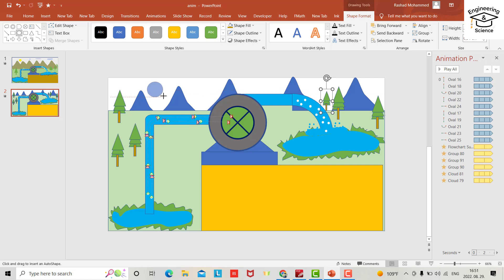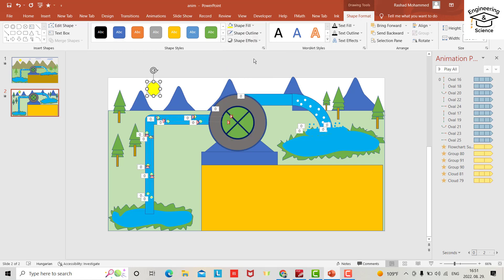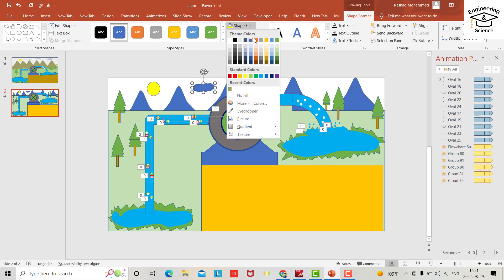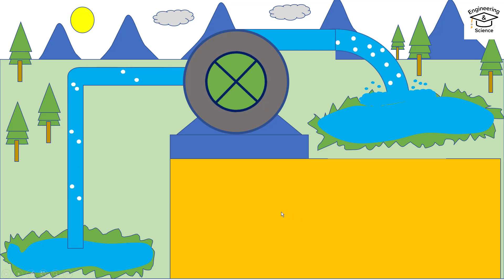You can also provide a sun and clouds here. Set the shape fill color. Let's see the final animation — that's all. I hope it can be helpful, have a nice time!